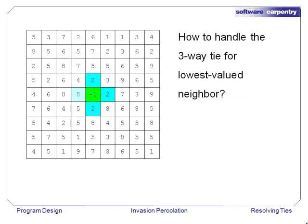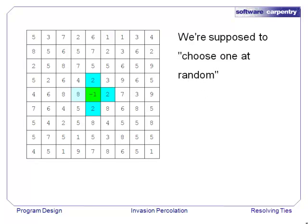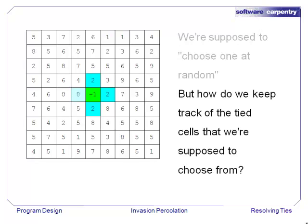This diagram shows the problem we face. Three cells next to the filled region are tied equal for having the lowest value. Our specification says we're supposed to choose one at random, but how do we keep track of the cells that we're supposed to be choosing from?